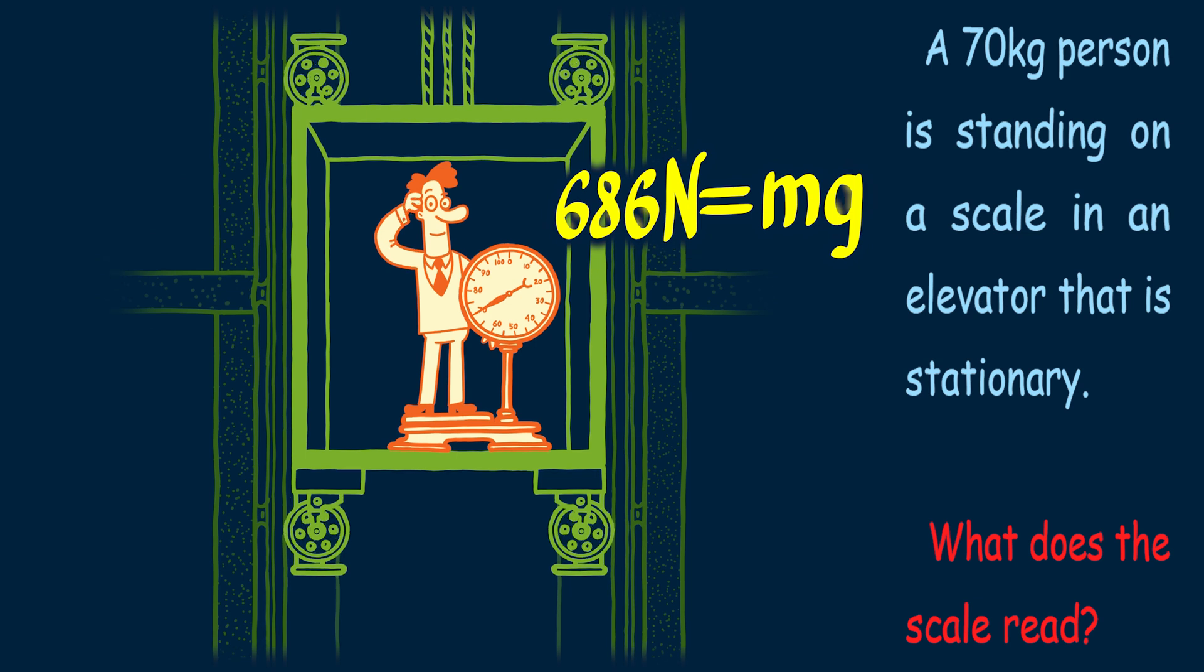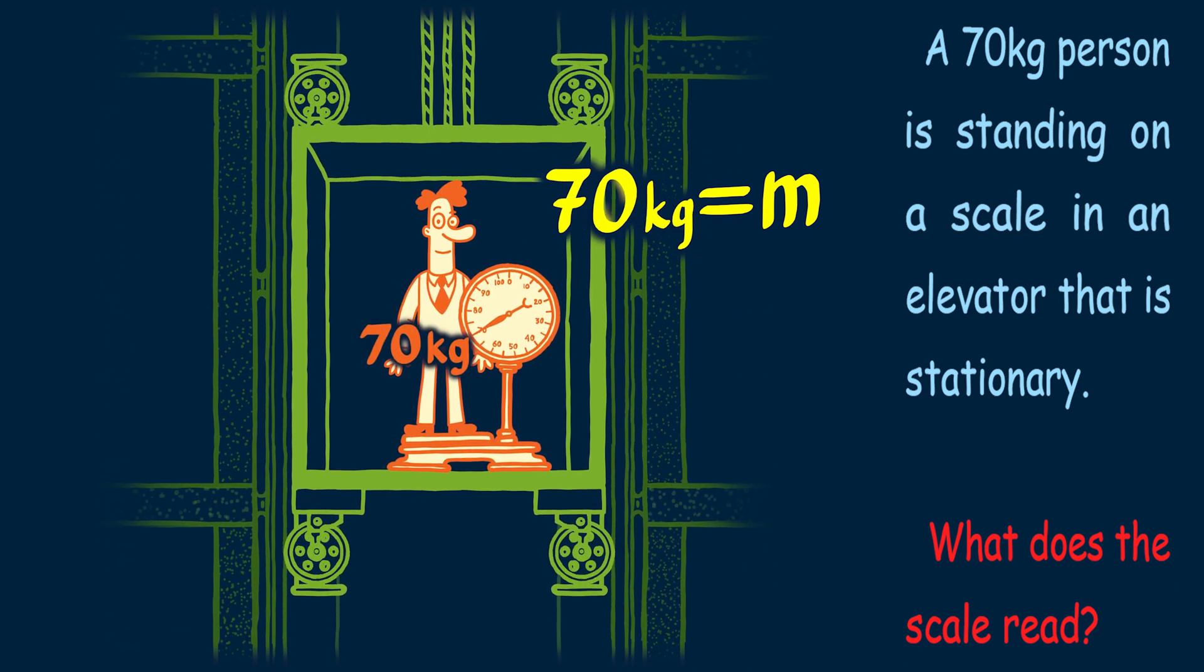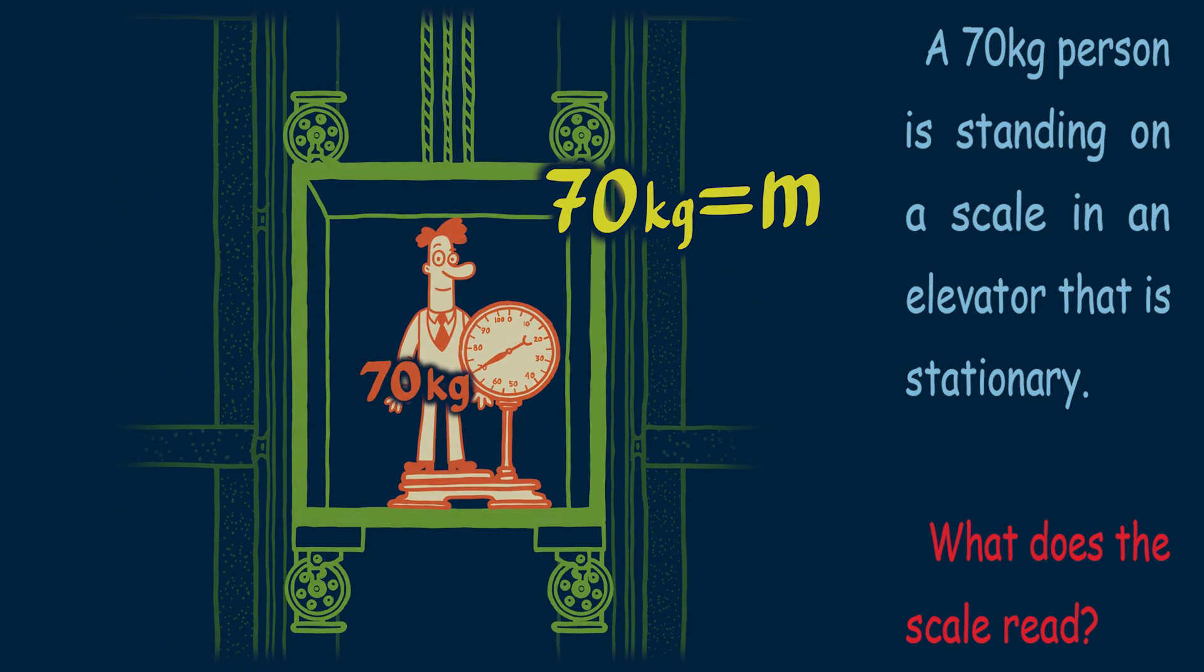The last step is to take our normal force and divide by g, which gives us an apparent weight of 70kg. This makes sense, because someone with a mass of 70kg feels like they weigh the same 70kg when the elevator isn't moving.